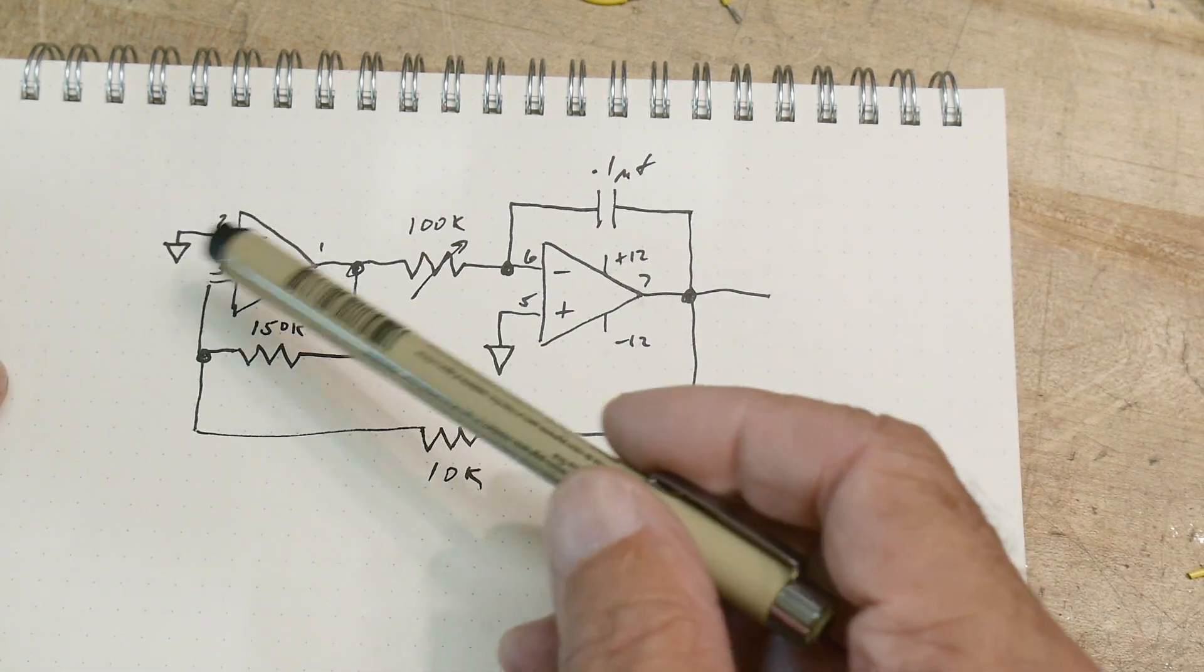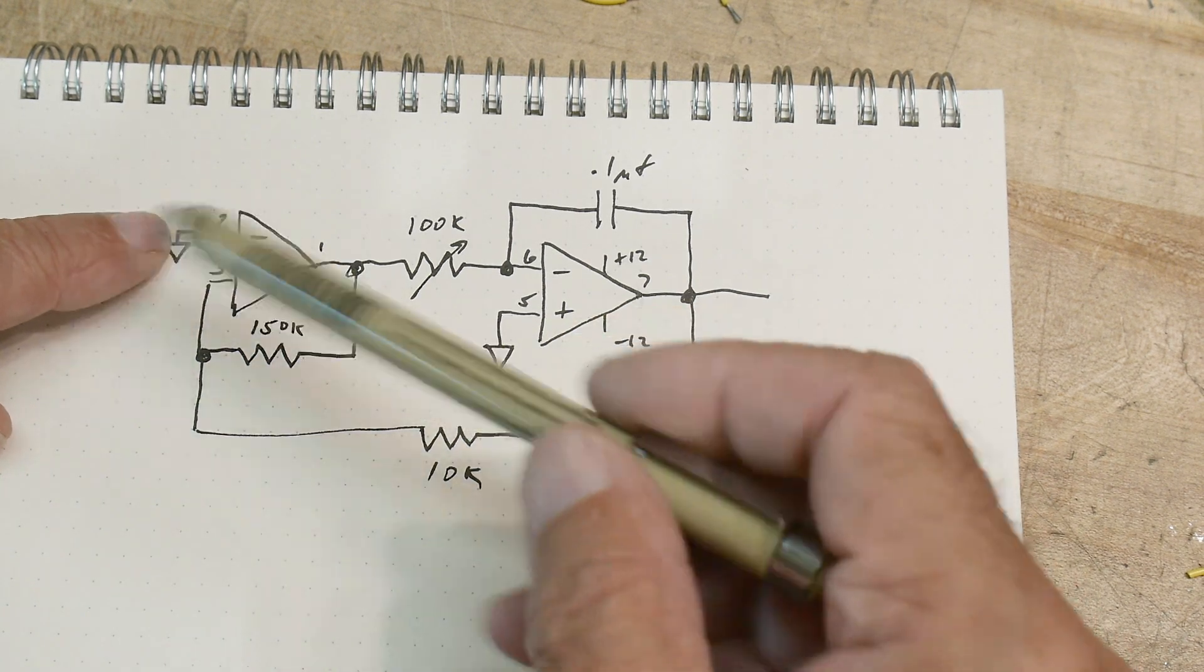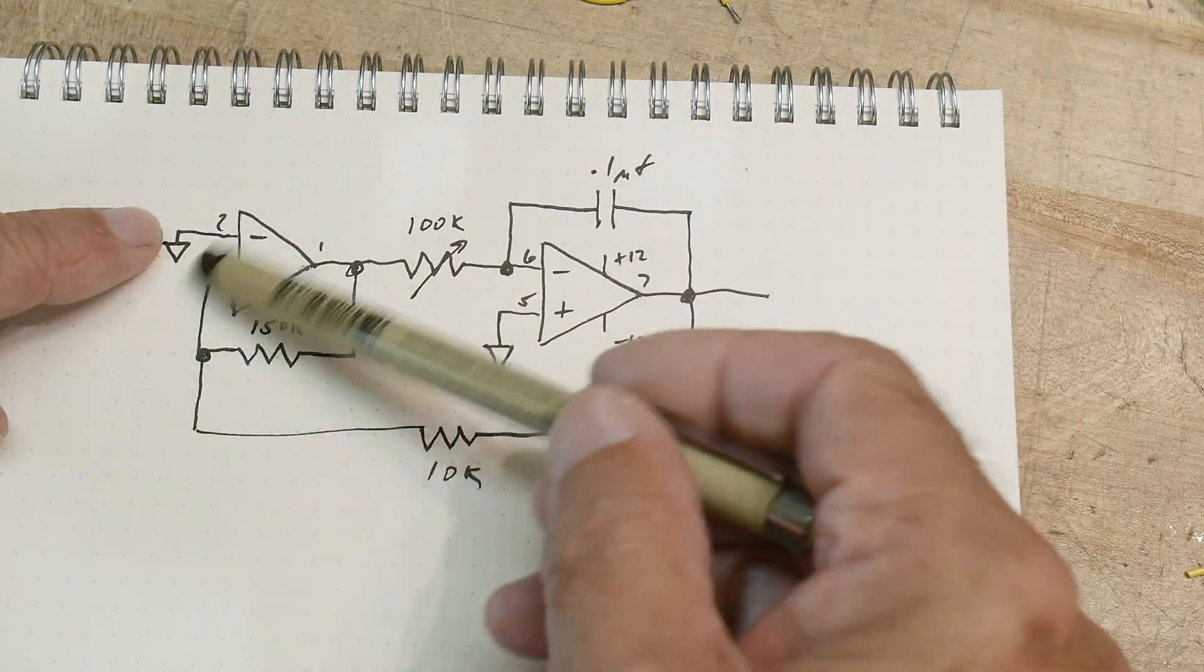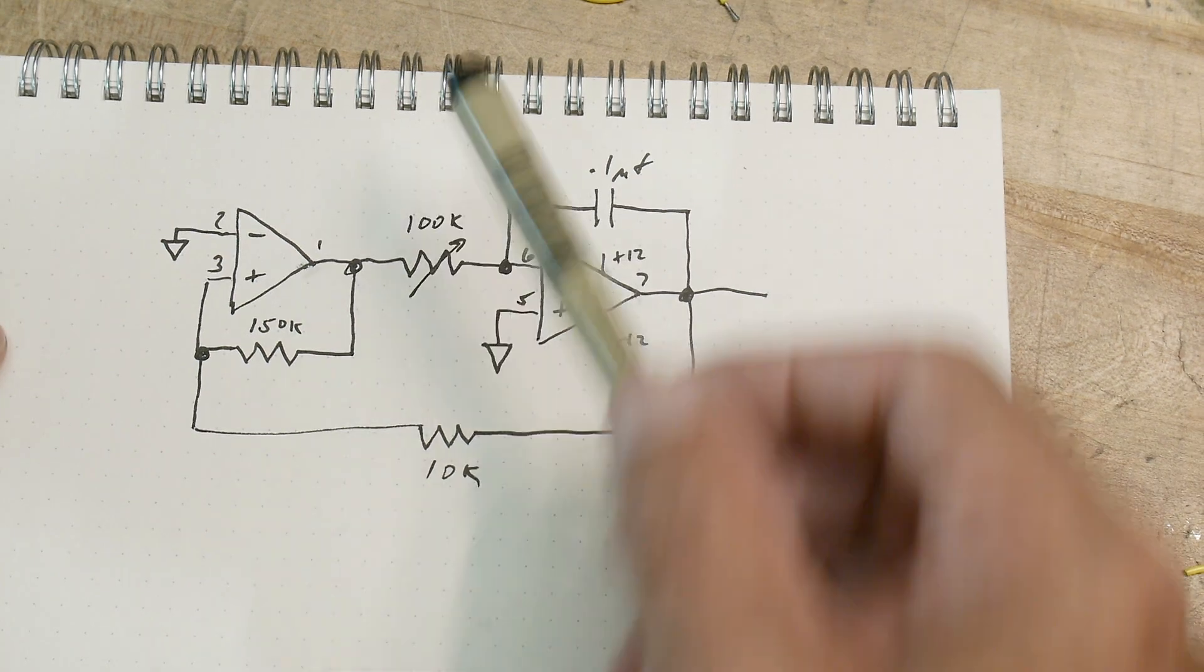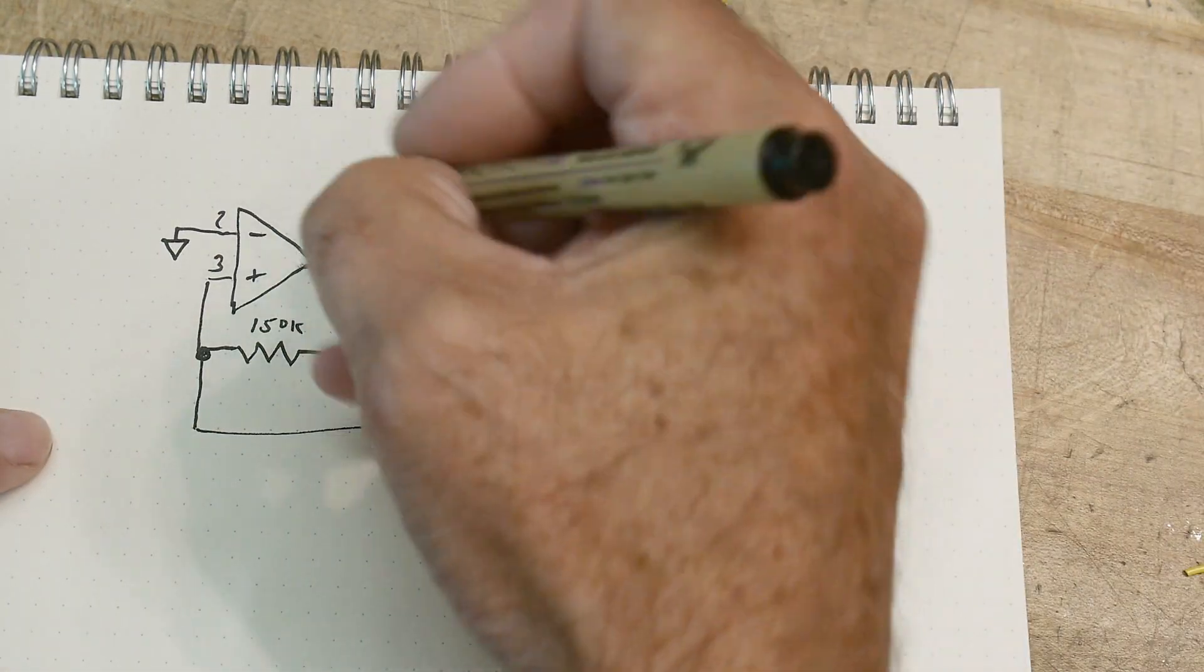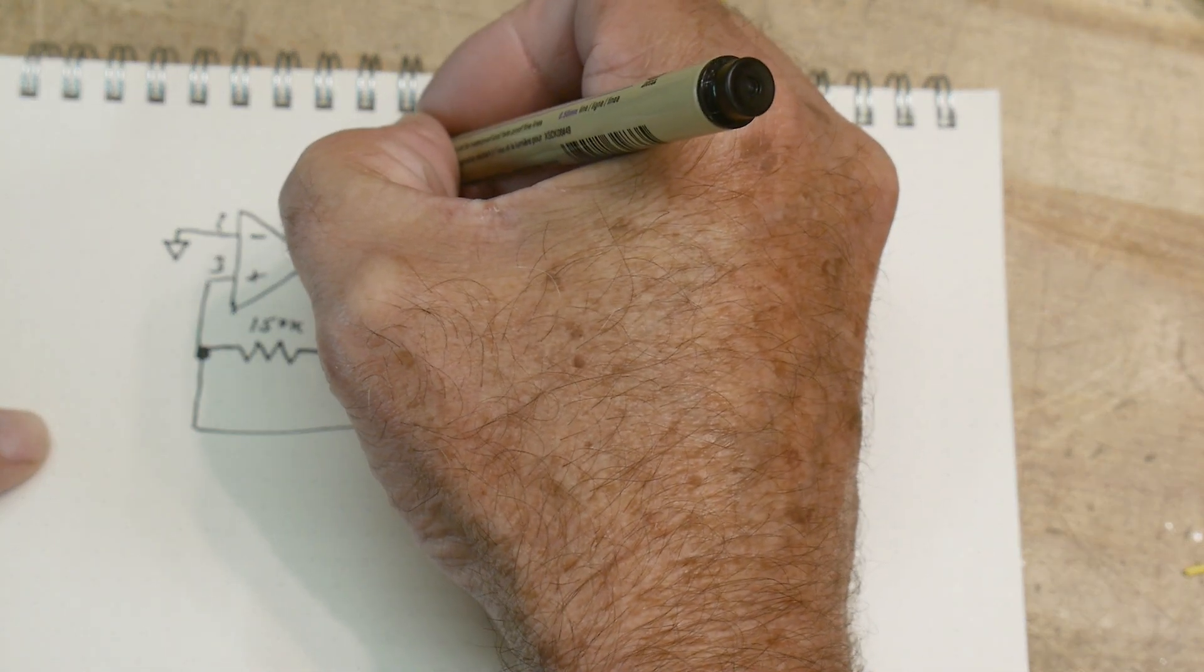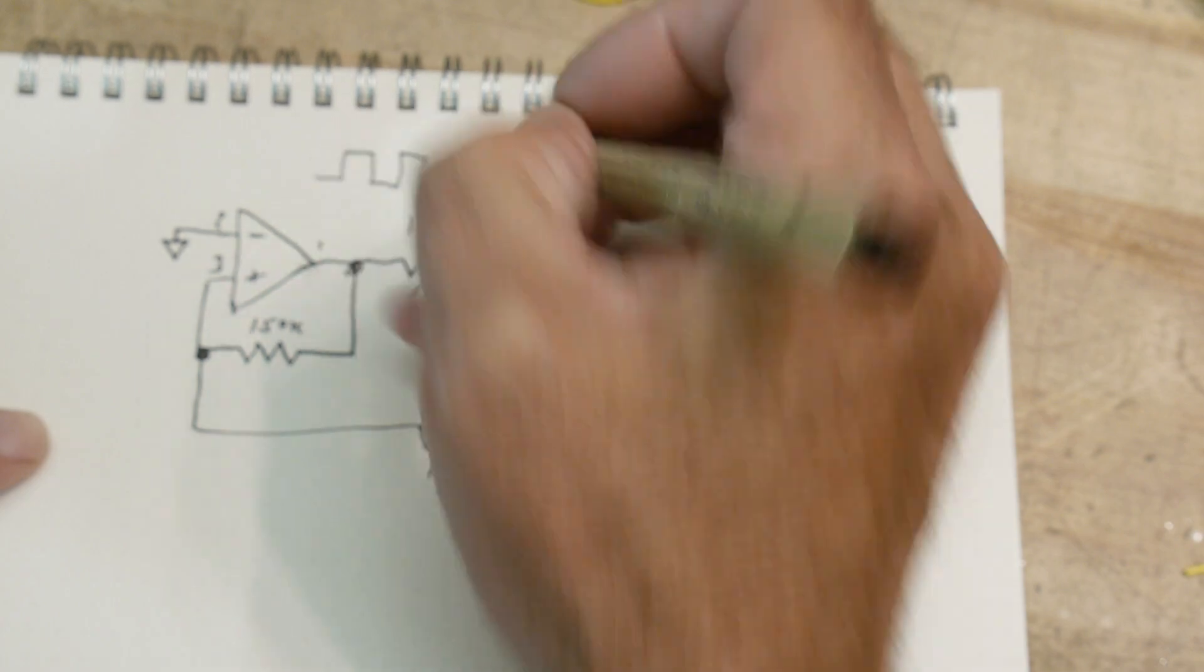It's either going to switch as it goes through ground—it's going to compare everything to ground. So if it's bigger than ground it'll flop; if it's larger than ground it'll flop the other way around. So flop, flop, flop, flop.